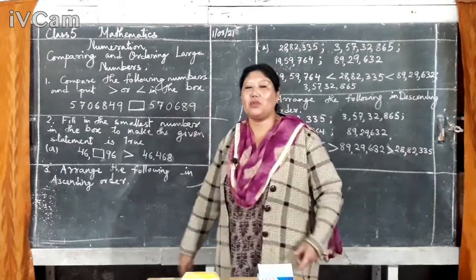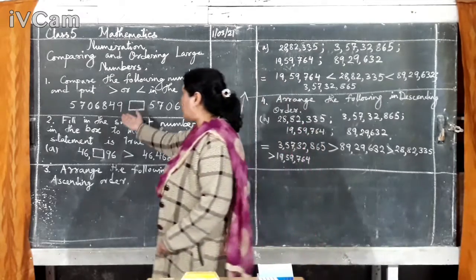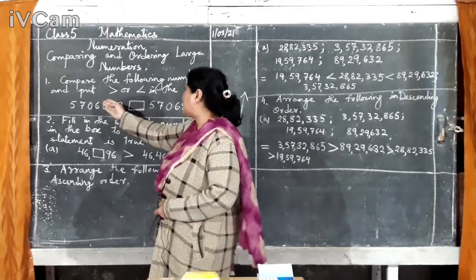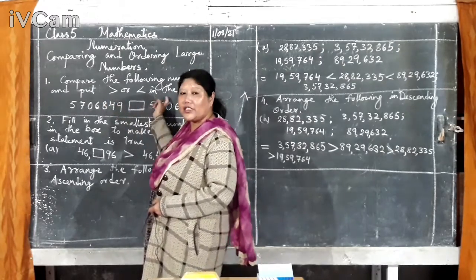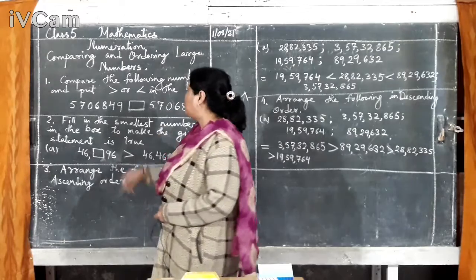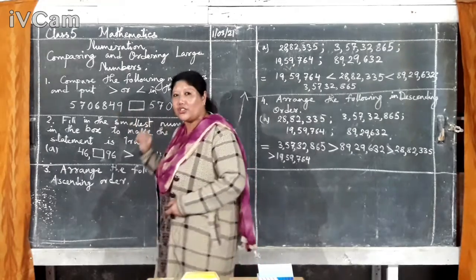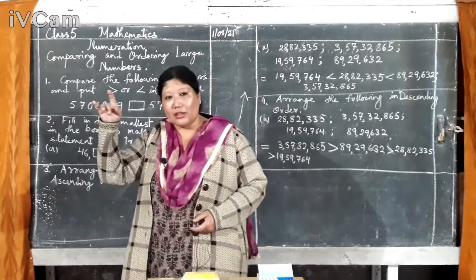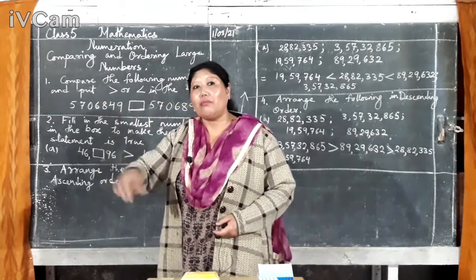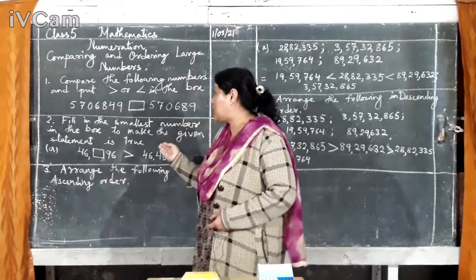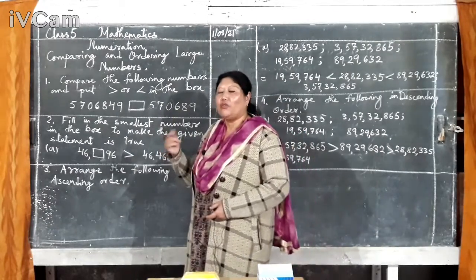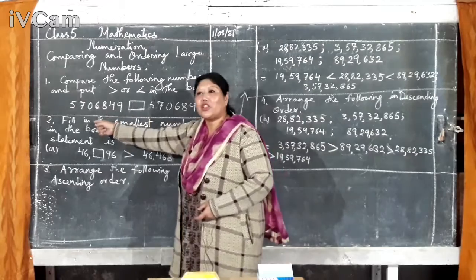How to compare numbers? Your first example is compare the following numbers and put the greater or smaller sign in the box. You have to compare these boxes. So, just to recap, first, last year, before last year, I have told you about this. Still, maybe you have forgotten.